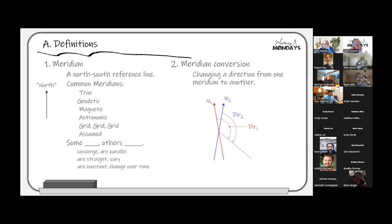I always did this with students because it confused them, particularly dealing with magnetic conversions. But it goes beyond just magnetic bearings — anytime you convert from one meridian to another, you're dealing with a conversion. A meridian is a north-south reference line — which direction are we using as a reference for north?